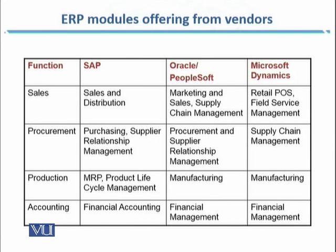In the case of production, SAP has Product Lifecycle Management or MRP (Material Resource Planning), which comes under the Production Planning module. In the Oracle case, the module they have is Manufacturing, and the same is the case for Microsoft Dynamics. If you are talking about accounting, SAP has an ERP module called Financial Accounting. For Oracle, that module is Financial Management, and the same applies to Microsoft Dynamics.